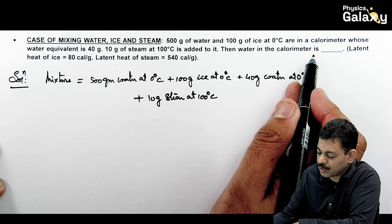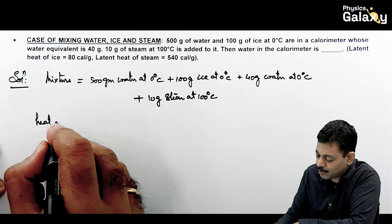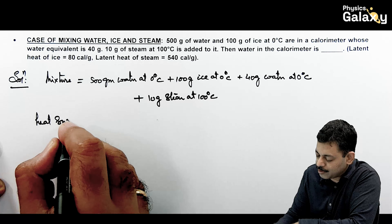Steam will supply heat and ice will absorb heat first and then melt. If ice melts completely and steam reaches 0°C, the system temperature will rise and everything will convert to water. Heat supplied by steam: latent heat is 540, so this is 10 × 540 plus 10 × 1 × 100 (steam dropping from 100 to 0°C). This gives 5400 + 1000 = 6400 calories — that is the amount of heat supplied by steam.